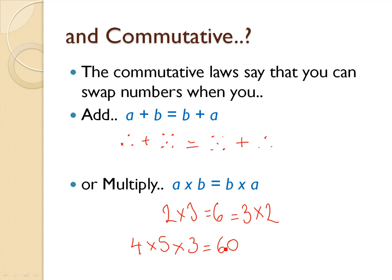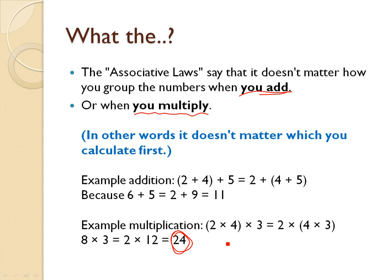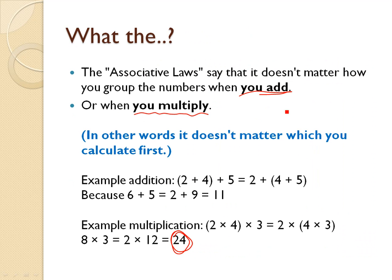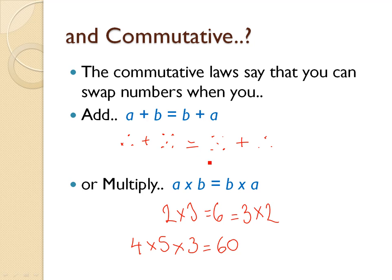So once more, just quickly. The associative and commutative laws. The associative law says that it doesn't matter how you group the numbers when you add or multiply. The commutative law says you can swap them around wherever you need to: a × b = b × a, just as a + b = b + a.